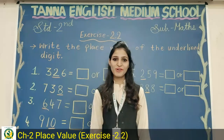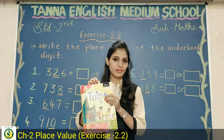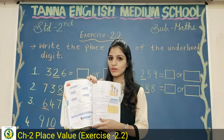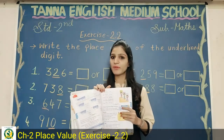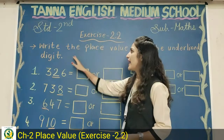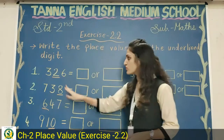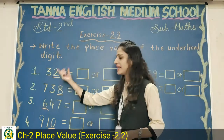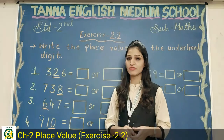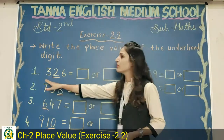Good morning, my dear students! How are you all? Hope you all are fine. So students, today we will do math. First, take out your Tulips book and open page number 90. Today we will do Exercise 2.2. The question is: write the place value of the underlined digit. You have to tell whether it is at ones place, hundreds place, or tens place.